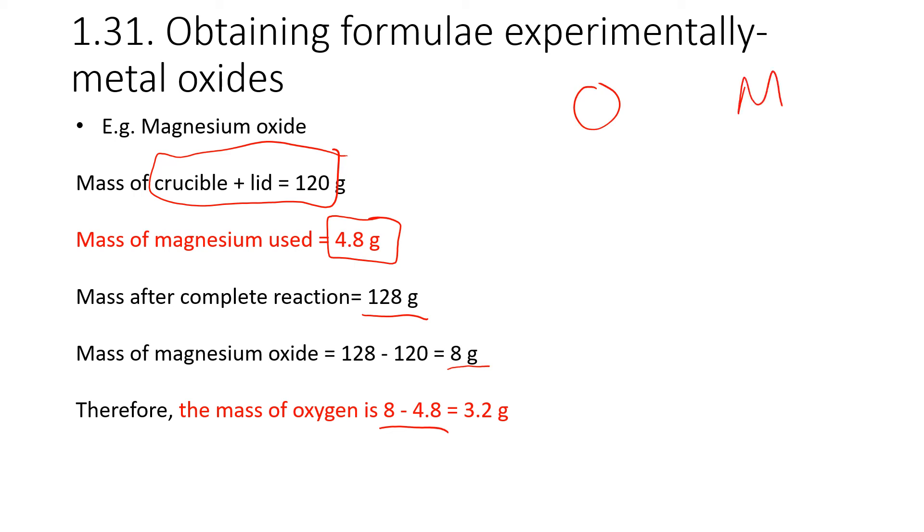Now we need to find out the moles of each of those. The moles of oxygen are going to be 3.2, which is the mass, divided by the AR, which is 16, which is going to be 0.2. The moles of magnesium is going to be the mass, which is 4.8, divided by 24, which is also 0.2. Therefore, the ratio between the two, 0.2 to 0.2, is obviously the same as 1 to 1. Therefore, the formula of magnesium oxide is going to be MgO.